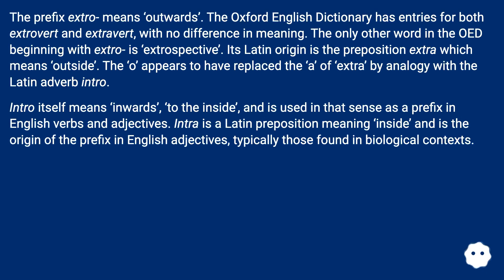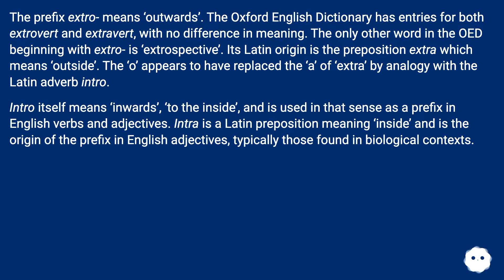The prefix 'extro' means outwards. The Oxford English Dictionary has entries for both 'extrovert' and 'extravert', with no difference in meaning. The only other word in the OED beginning with 'extro-' is 'extraspective'. Its Latin origin is the preposition 'extra', which means outside. The 'o' appears to have replaced the 'a' of 'extra' by analogy.